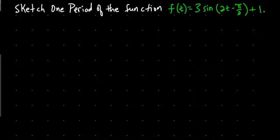So here I have a problem. Sketch one period of the function f of t equals 3 sine of 2t minus pi over 2, and then plus 1. And let me show you the first thing that you always do to these problems.